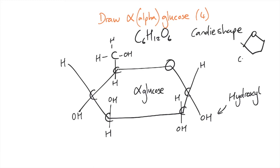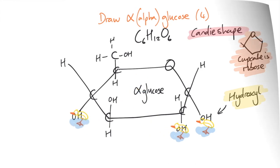I'm a very visual learner so I think of the candy shape for glucose and the cupcake shape for ribose. And I also think of the hydroxyl groups as little ducks on ponds in three locations so that I don't forget it.